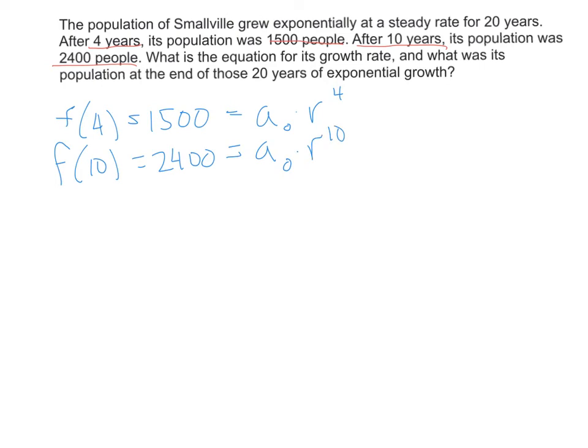Now, what that means is we have enough information to make a nice little ratio. So 2,400 over 1,500 is the same as a sub zero times r to the tenth over a sub zero again. In other words, the initial value times r to the fourth. Now, thinking about what we've got here, the a sub zeros can cancel, because you can divide both top and bottom by a sub zero. And, of course, we can reduce the r's to simply get r to the sixth using our exponent rules and knowledge. So 2,400 over 1,500 is 1.6, and so what we know is r to the sixth is 1.6.